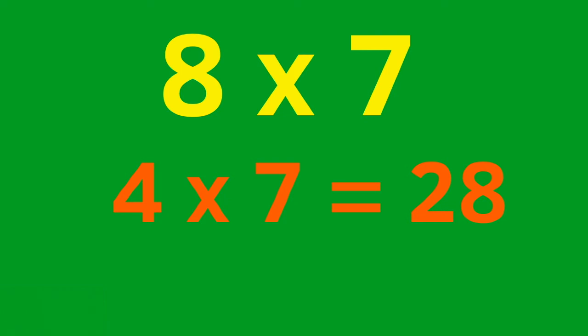I know that 4 is half of 8, so 4 times 7 is going to be half of 8 times 7. So I know that 28 times 2, or 28 plus 28, equals 8 times 7.